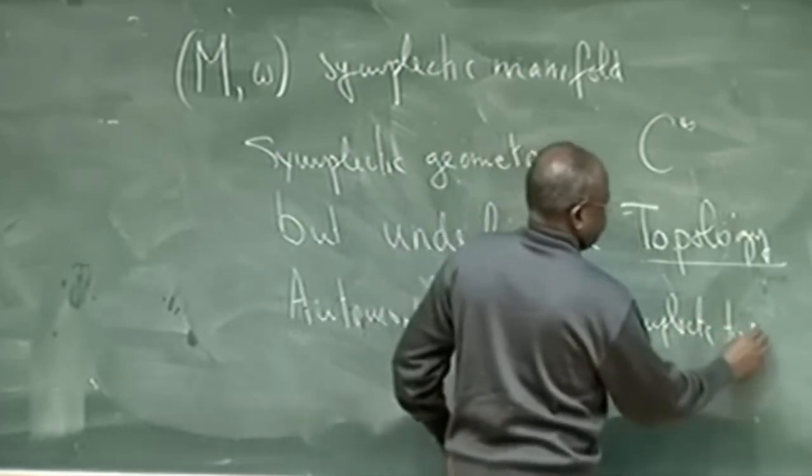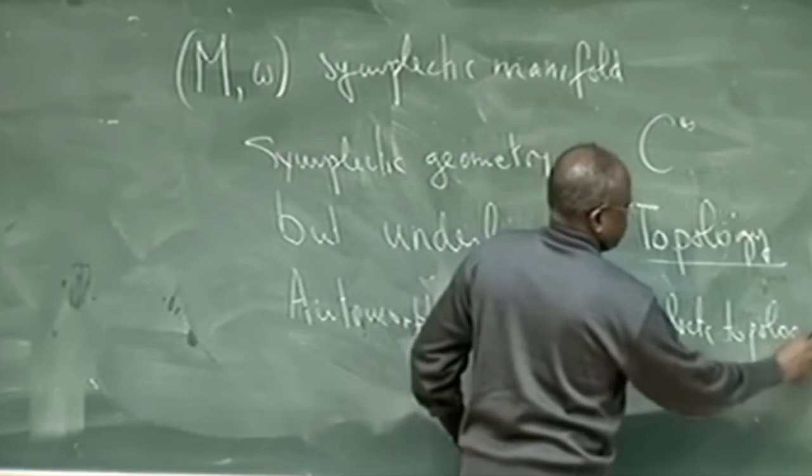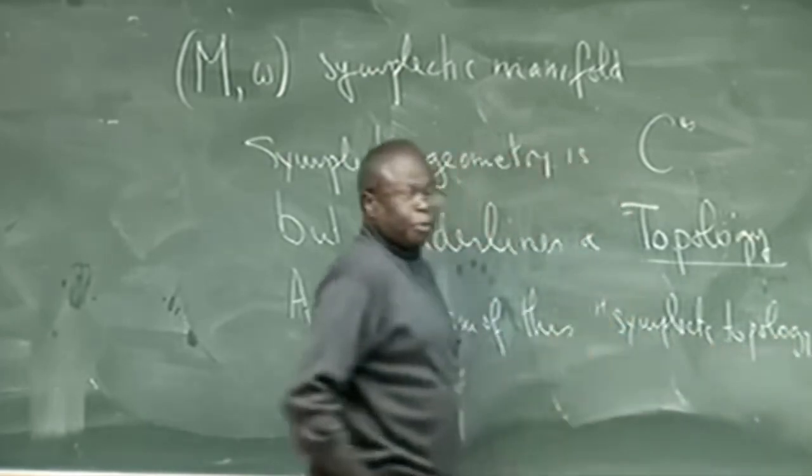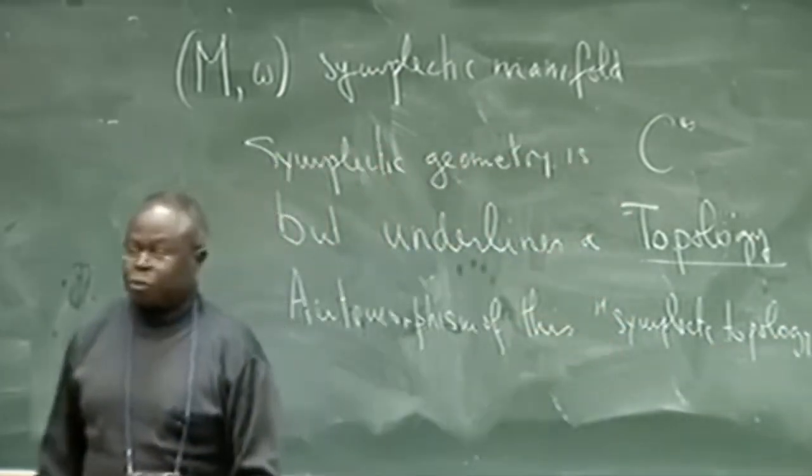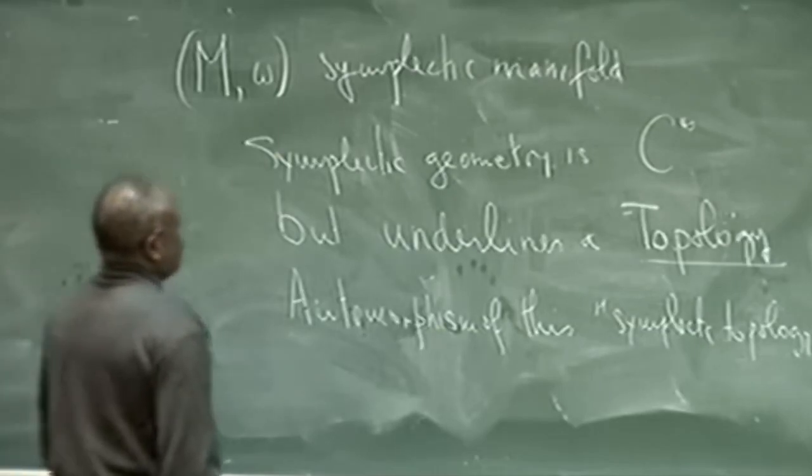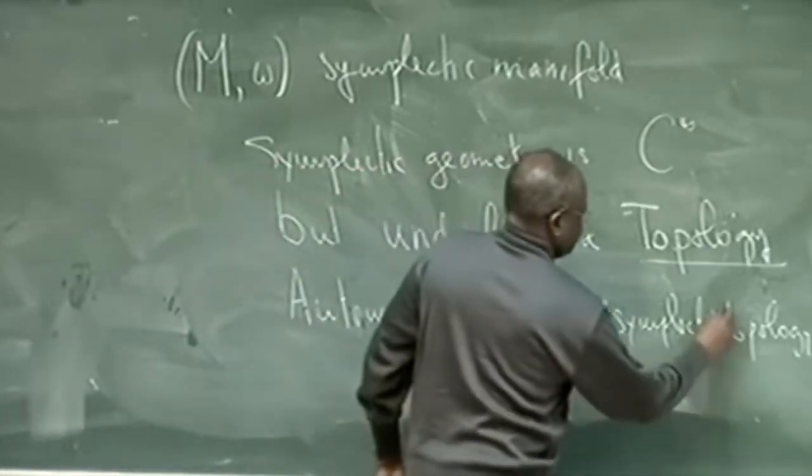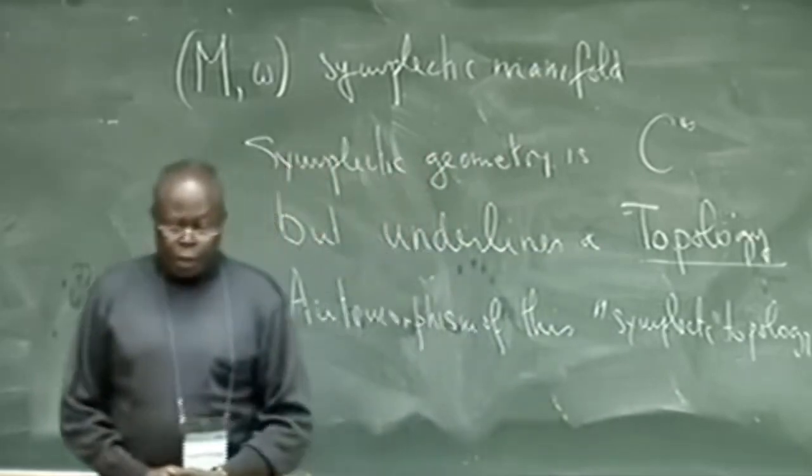Throughout his career, Banyaga has made numerous contributions to the field of symplectic topology, with a particular focus on the structure of groups of diffeomorphisms preserving a symplectic form, also known as symplectomorphisms.